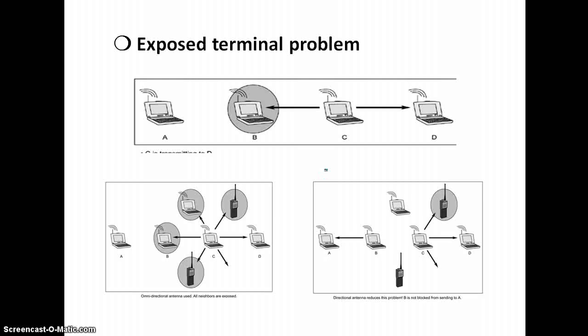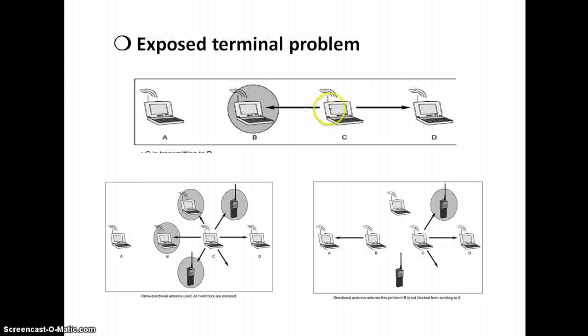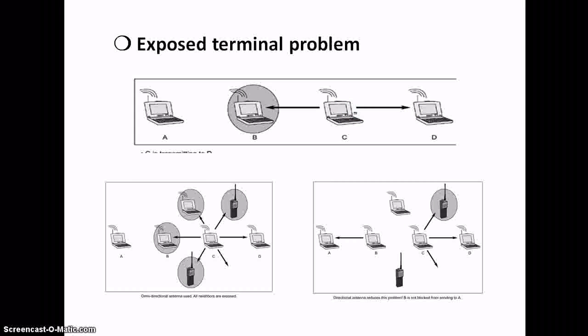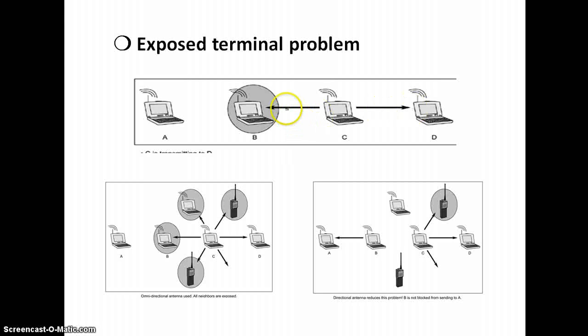Third is exposed terminal problem. A starts sending to B. C senses carrier, finds medium in use for A to B transmission. When D is outside of the range of A, therefore, waiting is necessary. A and C are exposed terminals.